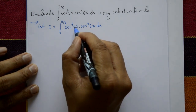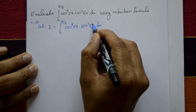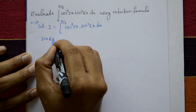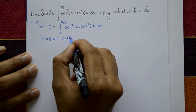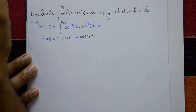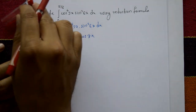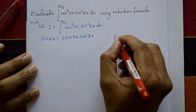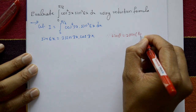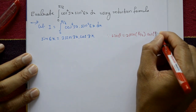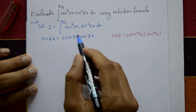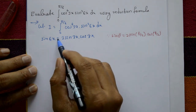We also require cos⁴(3x) and for sin²(6x) we use the double angle formula. sin(6x) = 2·sin(3x)·cos(3x), using the identity sin(θ) = 2·sin(θ/2)·cos(θ/2). Here θ = 6x, so θ/2 = 3x.